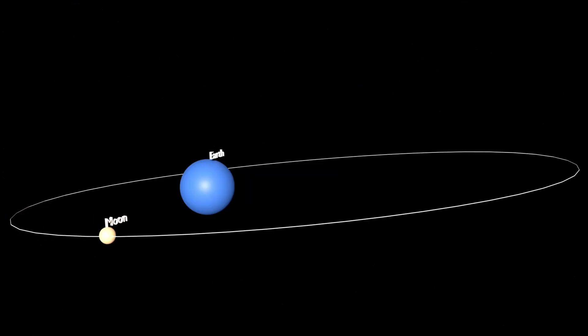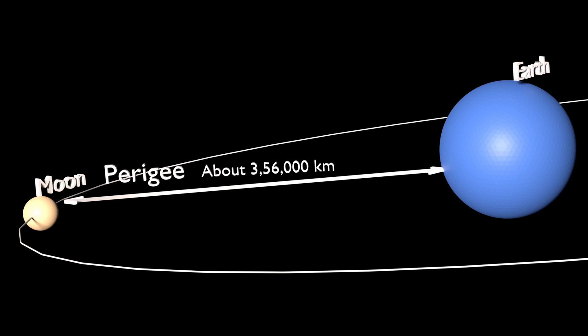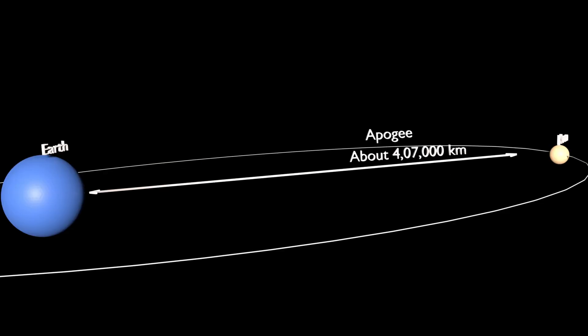The moon's orbit of revolution is elliptical, as that of the earth. Hence, the distance of the moon from the earth is not the same everywhere along its orbit while revolving. When it is closer to the earth, it is said to be in perigee, and when it is farthest, the position is called apogee.